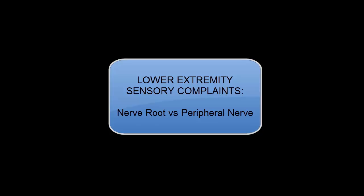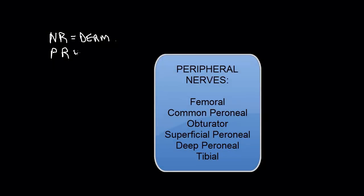We're going to be talking about sensory loss, pain, or paresthesia complaints in the lower extremity. We're considering whether the problem is from the nerve root, and therefore the sensory loss is coming from a dermatome, or the problem is coming from a peripheral nerve issue, in which case the problem would be located at a pure patch.